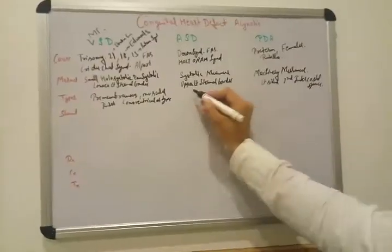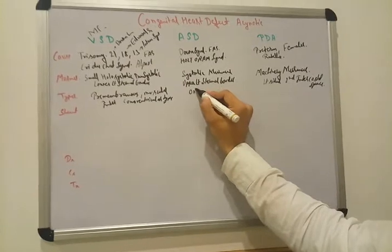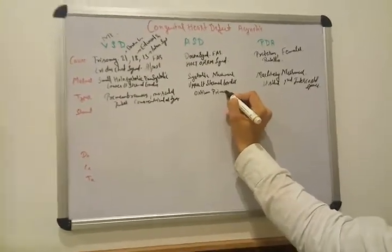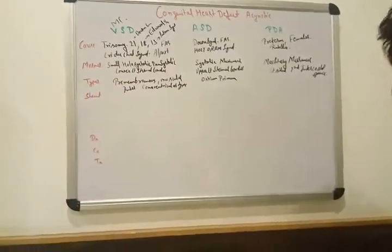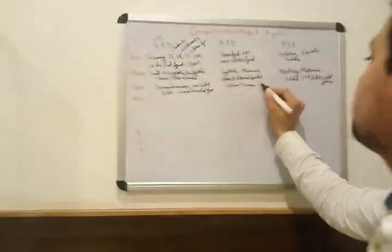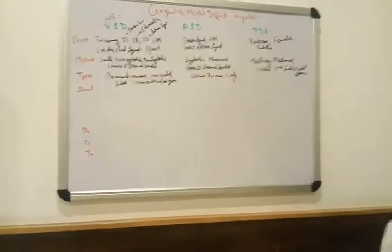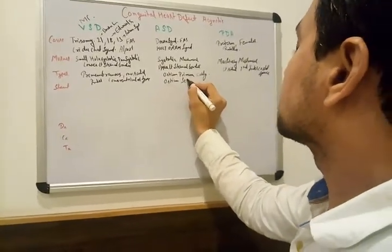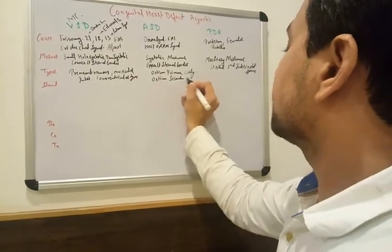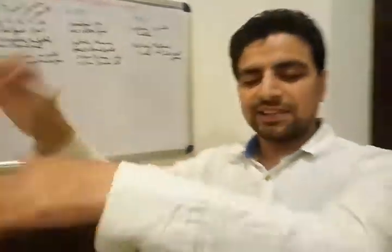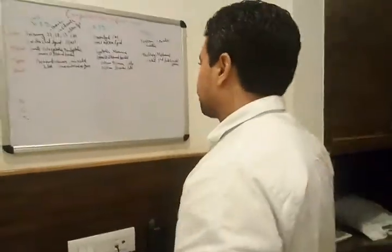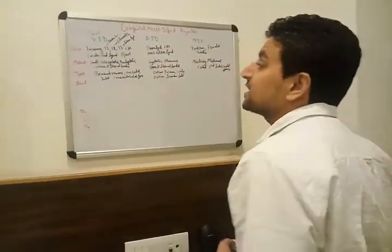For ASD, atrial septal defect, there are two main types: ostium primum, which presents early, and ostium secundum, which presents late. A memory tip: primary comes early, secondary comes late.